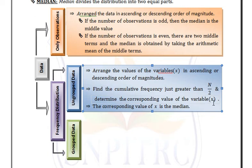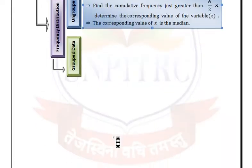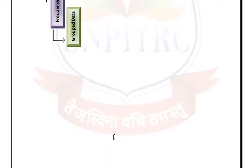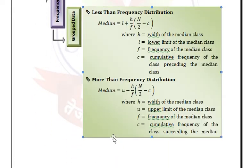In frequency distribution for grouped data, we have two formulas. For less than frequency distribution, the median is: L + (H/F) × (N/2 − C), where L is the lower limit of the median class and F is the frequency of the median class.